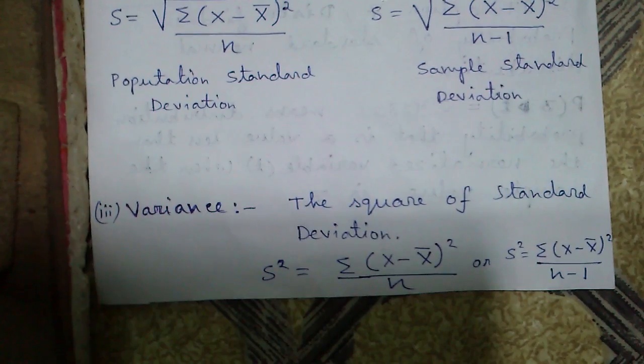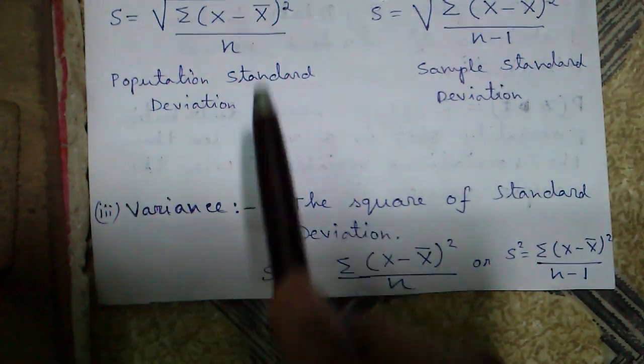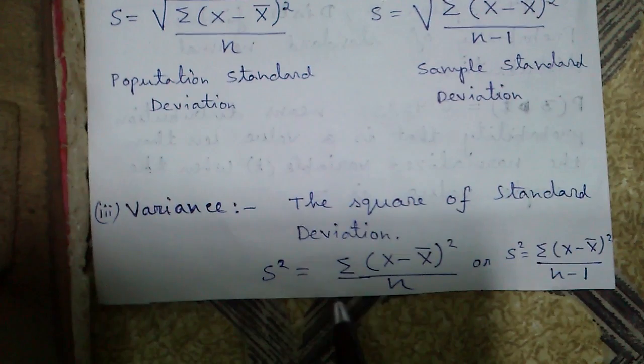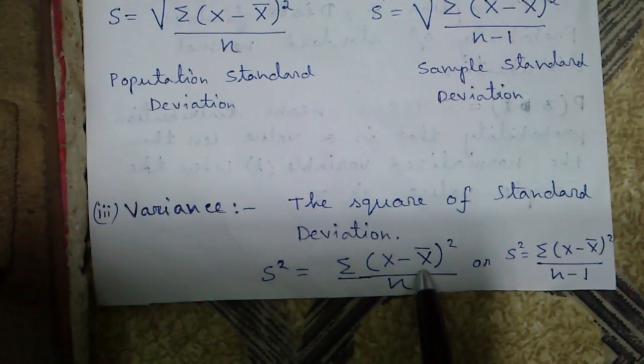Number three is variance. Variance is the square of standard deviation. The formula is same, only the root over sign is missing because it is the square of standard deviation.